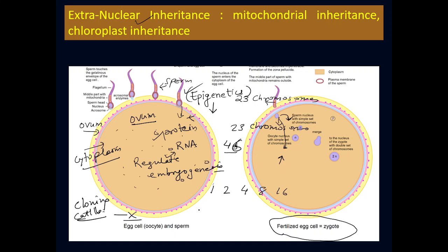You have probably heard about clone Dolly. Dolly was created by a process called somatic cell nuclear transfer. You will be surprised to know that there were roughly 276 failure experiments before it became successful.